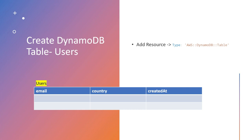Hello everyone and welcome back. In this section we are going to simply add a new resource which is our DynamoDB table. We're going to name our table users and we are going to have three attributes mentioned while creating the table: email, country, and created at. So let's go ahead and add a resource to our serverless YAML file.